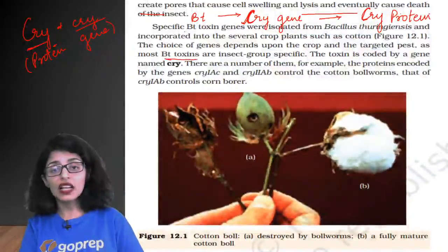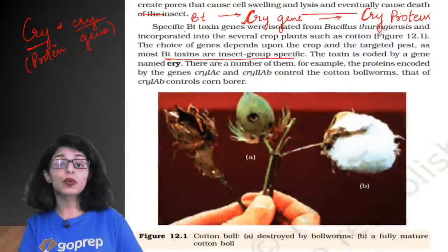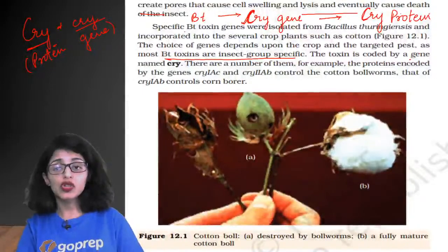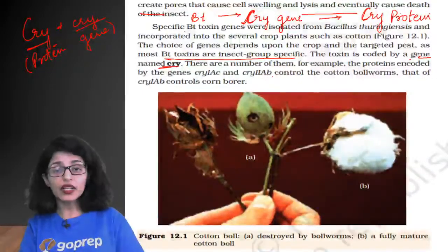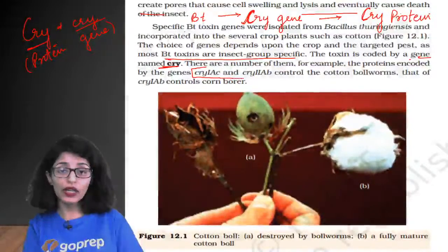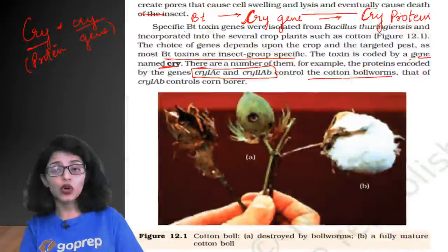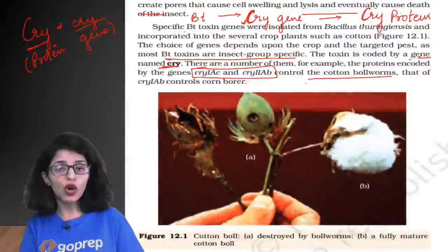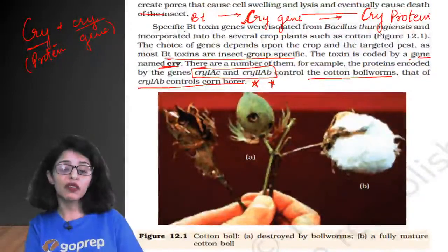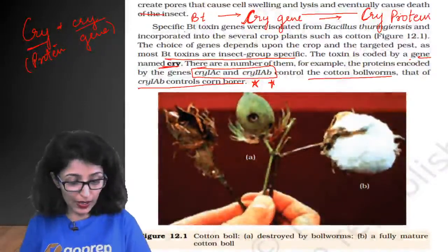The Bt toxins are insect group-specific. Different types of cry genes: cry1Ac and cry2Ab control cotton boll worms, while cry1Ab is effective against corn borer. Very, very important for exams. Overall, biotechnology chapter gives 4 to 5 questions every year — you can verify this from any previous year paper.